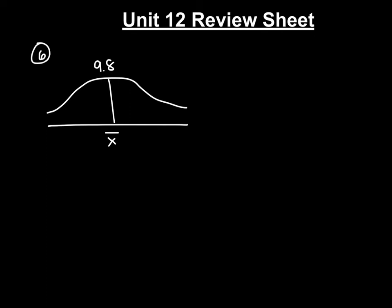11 is more than 9.8, so we're going to go to the right on our curve. If we go one standard deviation up, 9.8 plus 0.6 is 10.4. I need to keep going because I want to reach 11. If I go another standard deviation up, 10.4 plus 0.6 is 11. So we want to determine the number of boxes expected to weigh more than 11 ounces — we're looking for everything greater than 11.